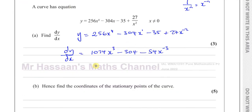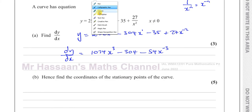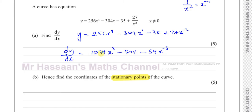Now we move to part B. It says 'hence' — meaning use what you just did — find the coordinates of the stationary points of this curve. The stationary points are the points where the gradient of the curve equals 0. dy/dx is the gradient function; it tells you the gradient of the curve at any point.